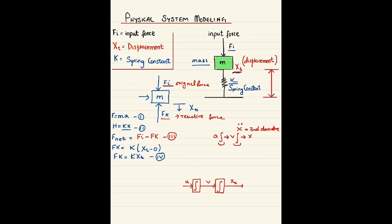The beauty of starting the block diagram from the integral section is that you can easily work towards both the output and input sections. Since a is acceleration, making a the subject of equation one gives a equals F over m, or equivalently F times 1/m. So we place a new block of 1/m, with f_net (total force) as input, producing the acceleration a.